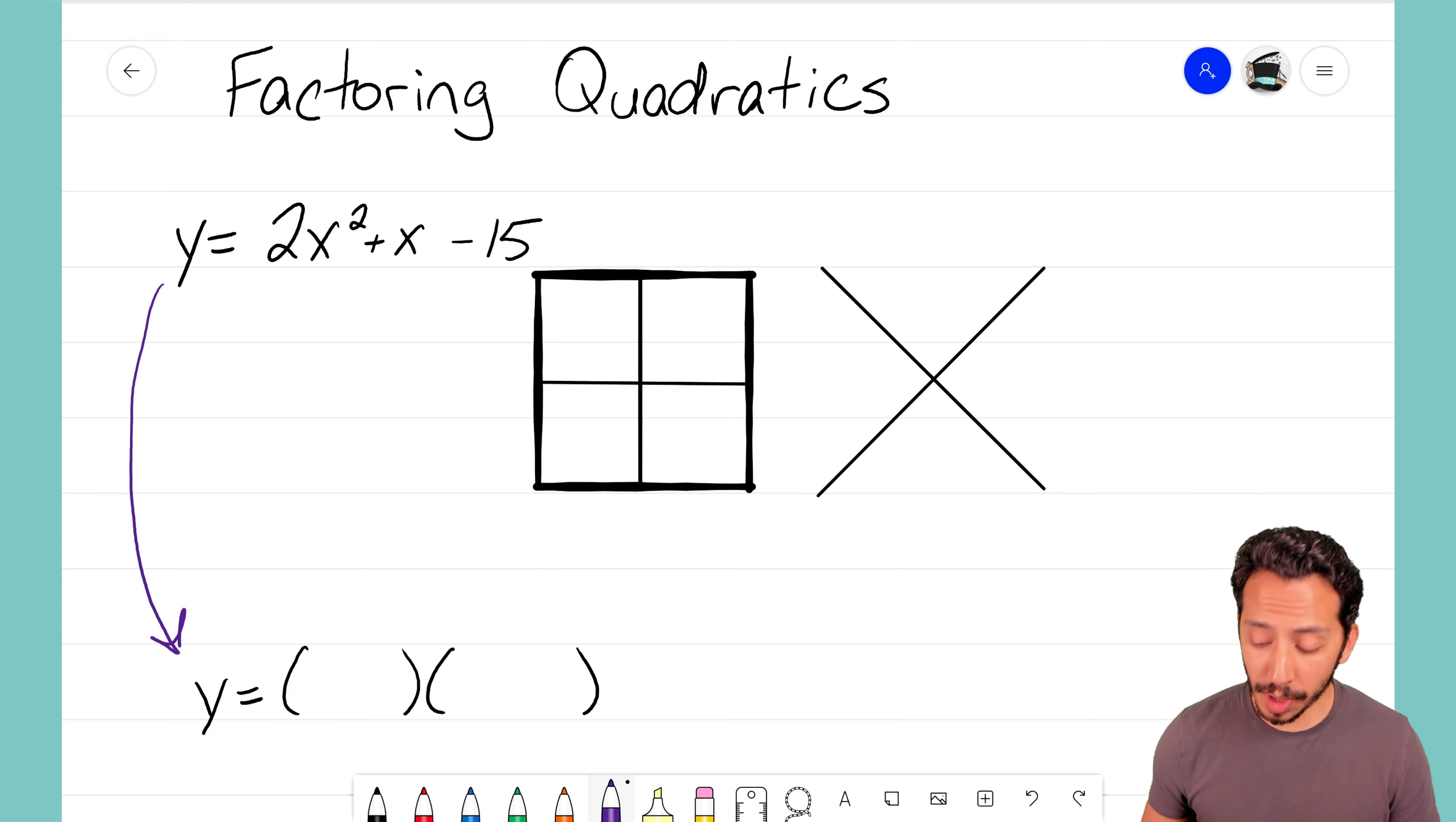Now the first step when factoring a quadratic is that we're going to take the x squared term and place that in the bottom left corner of our generic rectangle. So 2x squared goes right there. What goes in the upper right corner is our constant term or our term that has no x value. In this case our constant term is negative 15. So I'm going to write negative 15 right there in the top right corner.